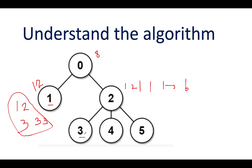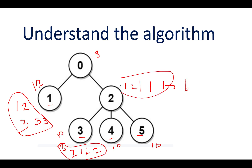For node three: the distance from one is three, from zero is two, from two is one, from four is two, and from five is two — adding up to 10. Since nodes three, four, and five are in exactly the same position in the tree, their distances are identical, so the answers for four and five are also 10. This gives us the answer array we need to return.